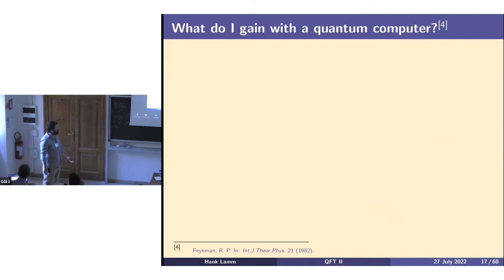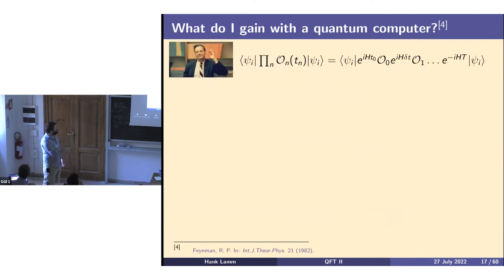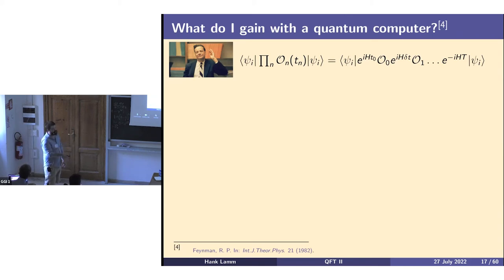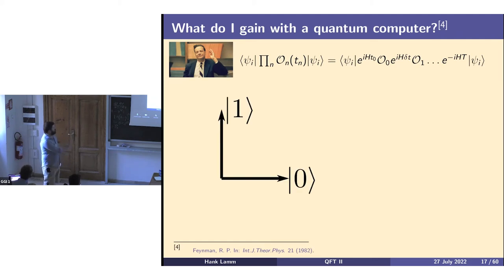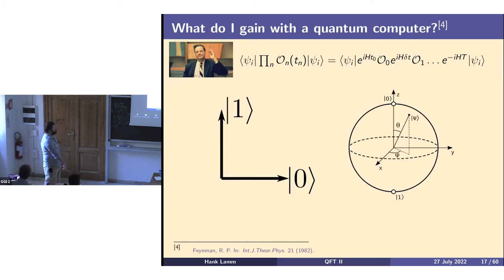So what do I gain with a quantum computer? As Feynman put it pithily, a quantum computer does real-time evolution for you. A quantum computer is just a quantum mechanical system that you can evolve with a Hamiltonian. Instead of trying to force a classical computer to tell you something about quantum mechanics, you just make quantum tell you about quantum itself. You go from bits to qubits.